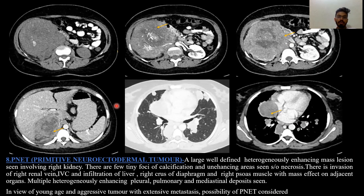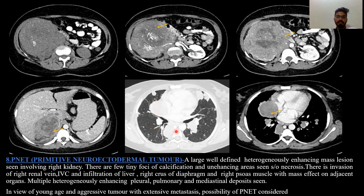Next case: PNET, primitive neuroectodermal tumor. There is a large well-defined heterogeneously enhancing mass lesion involving the right kidney, with tiny foci of calcification and non-enhancing areas likely representing necrosis. There is invasion of the right renal vein and IVC. Infiltration of the liver, right crus of diaphragm, and right psoas muscle is also seen. In the chest, multiple heterogeneously enhancing pleural, pulmonary, and mediastinal deposits are present. Given the young age and aggressive tumor with extensive metastasis, possibility of PNET is considered.